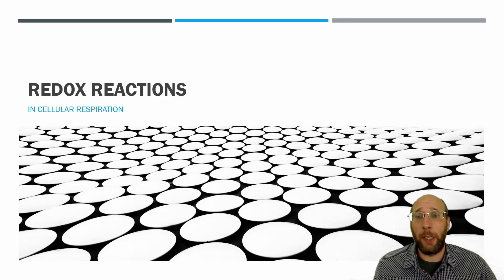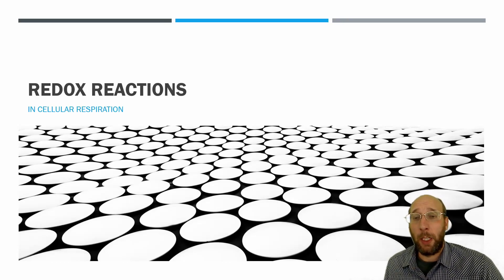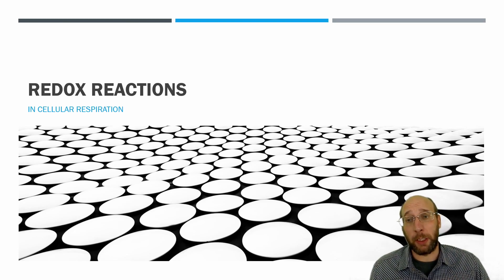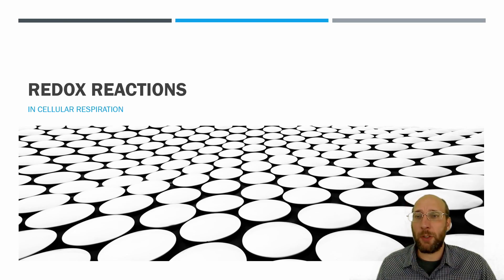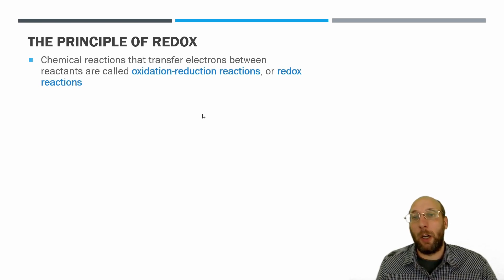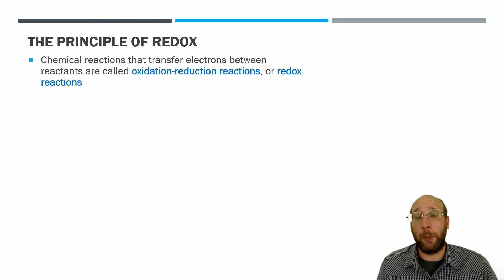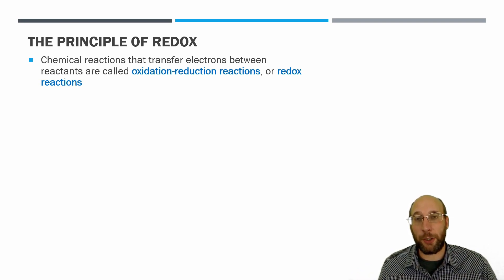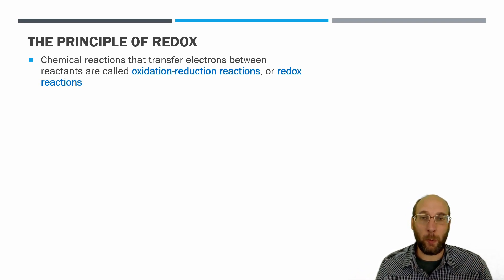Today I want to talk about redox reactions, particularly in biological systems. Redox reactions are chemical reactions that transfer electrons between reactants. Usually this means that there is an oxidation reaction occurring along with a reduction reaction occurring.